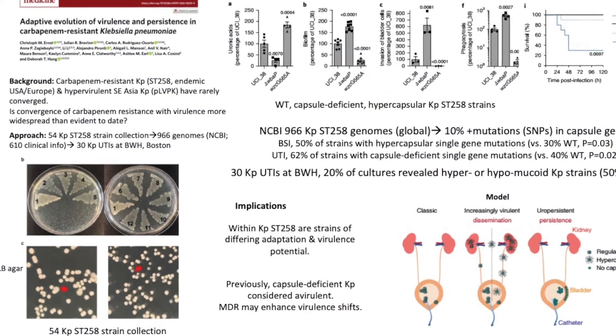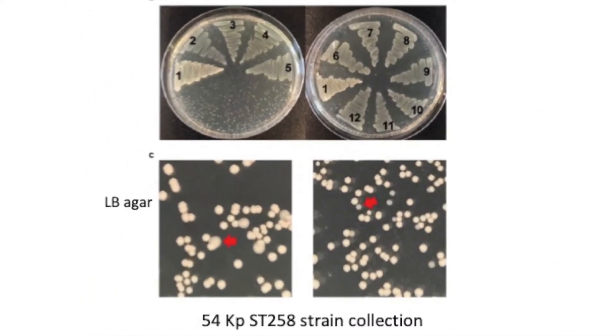On the slide in the bottom left, at the top, you can see they appreciated from their collection of strains that some of the strains were very mucoid, indicative of a hypercapsular form, and some did not have that. And in fact, when they looked more carefully at LB agar, they realized they could distinguish these two forms of KP ST258 strains in their collection. They then went on and identified genes in the bacteria that traced or tracked to this capsule-deficient and hypercapsular form.